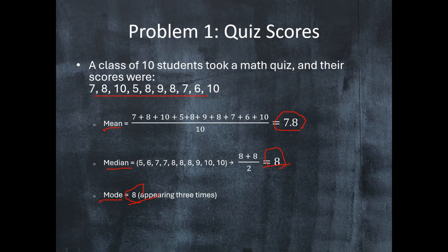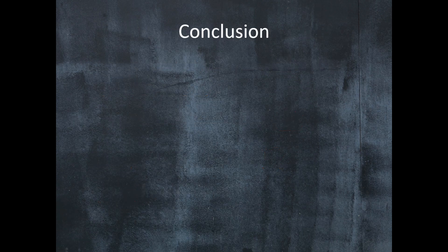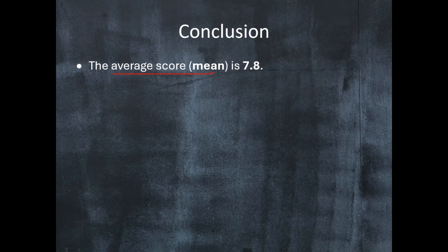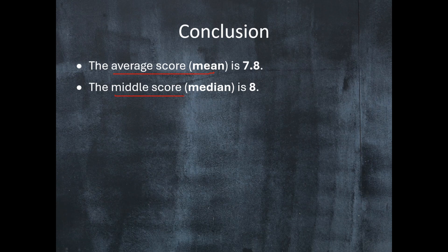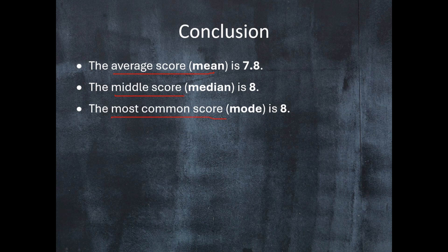So what conclusions can we draw from this data set given these measurements? We can say that the average score of the students is 7.8, the middle score or median is 8, and the most common score or mode is also 8.